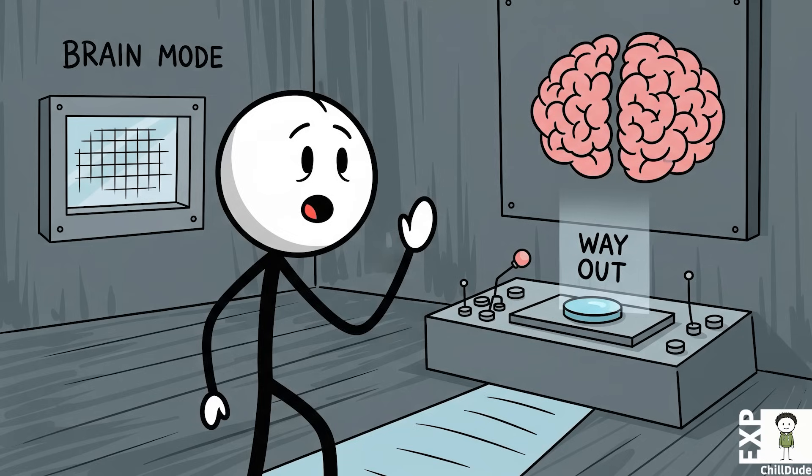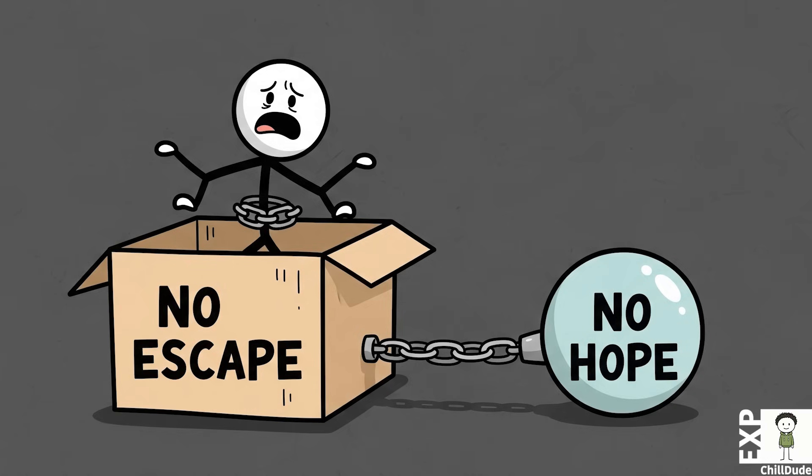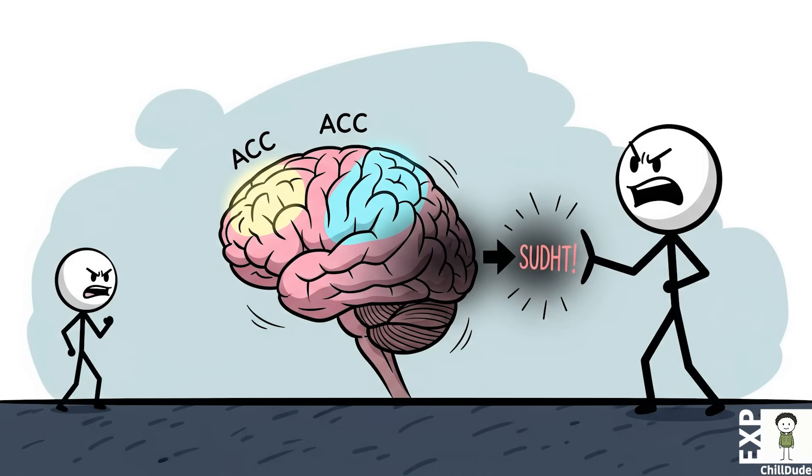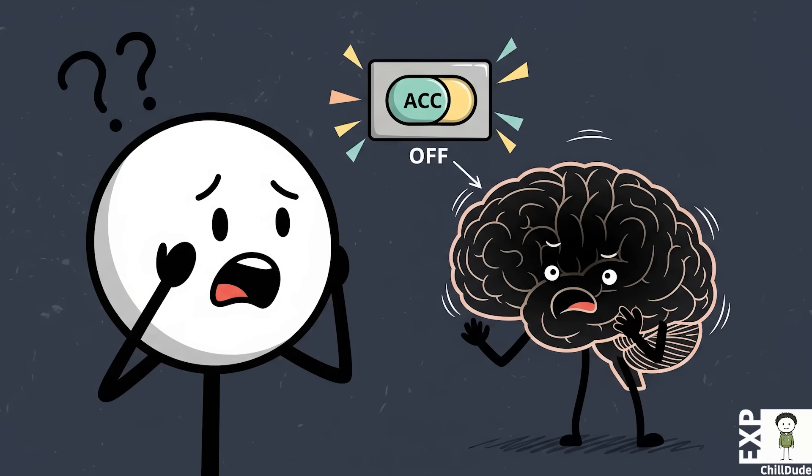According to the scientific model of psychogenic death, the process begins when the brain concludes that a situation is both inescapable and hopeless. When an individual internalizes the belief that they have lost all control, that nothing they do will ever matter again, the activity in the anterior cingulate cortex grinds to a halt. It essentially goes offline.